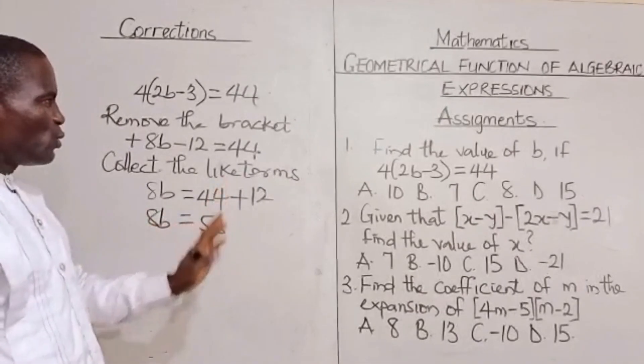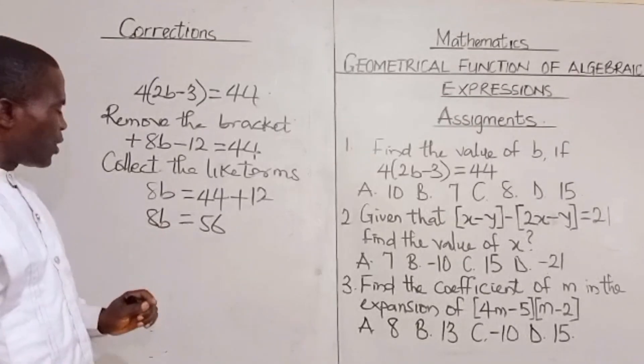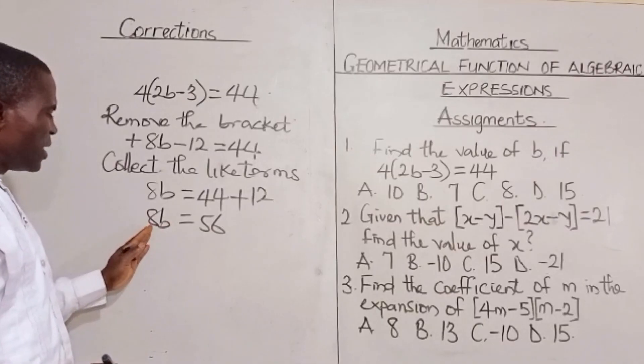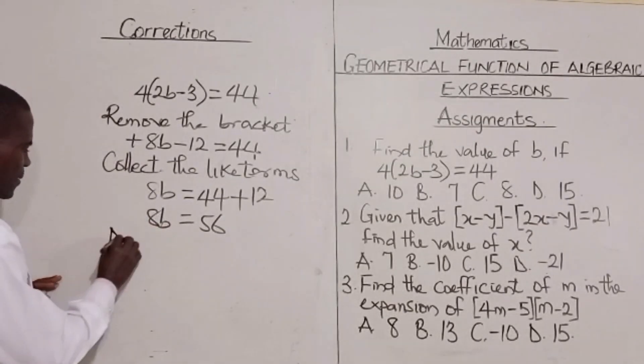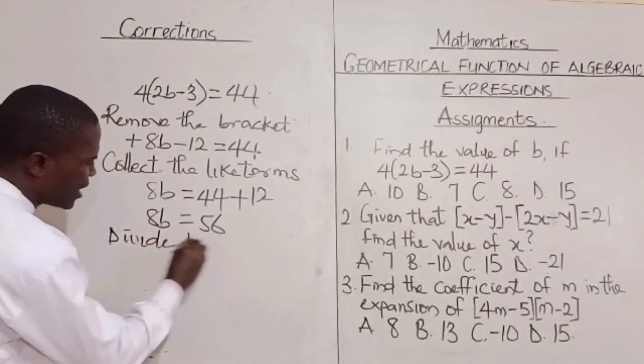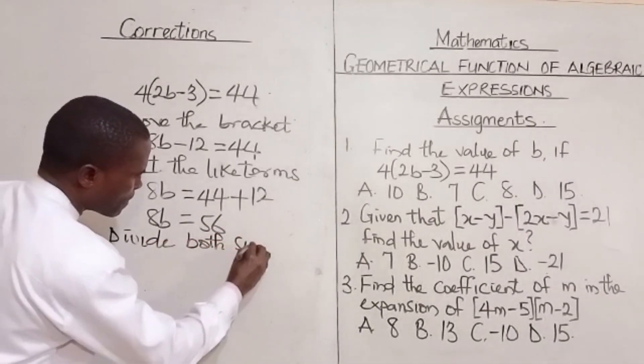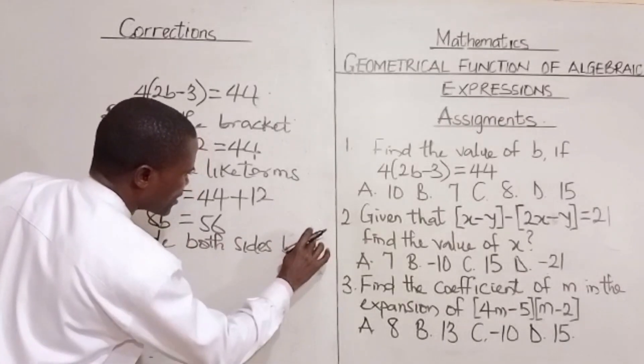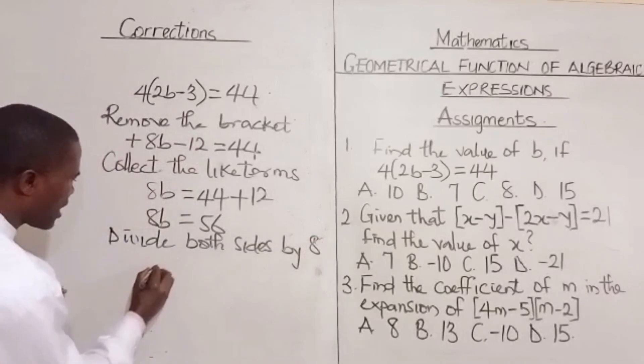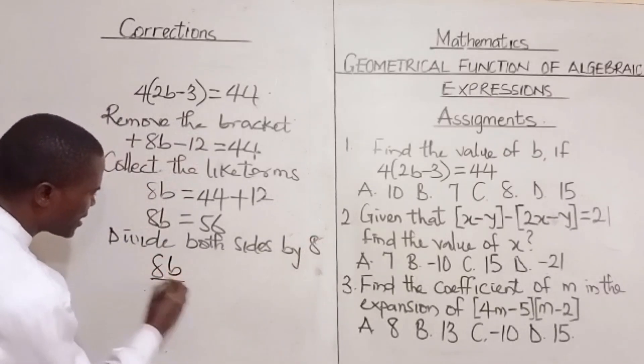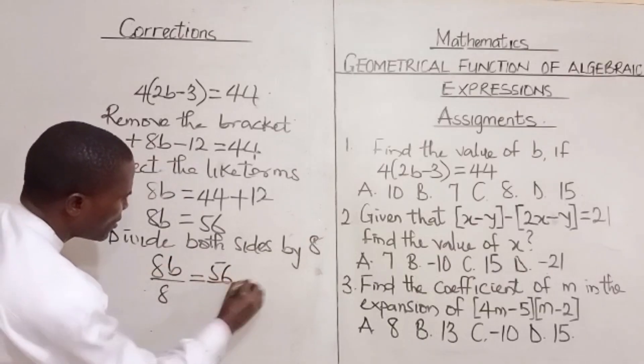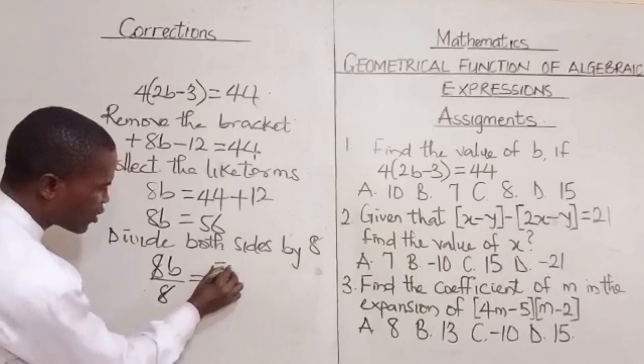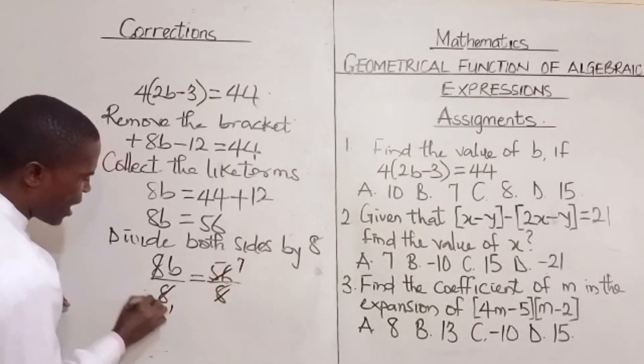What they ask us to do is to find the value of b, but before we can get the value of b, this 8 has to be eliminated. How do we eliminate 8? We divide both sides by 8. Now we are going to have 8b divided by 8 is equal to 56 divided by 8.